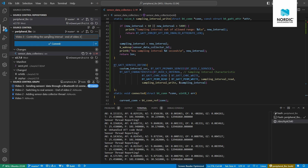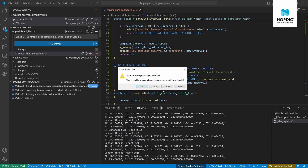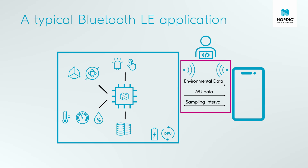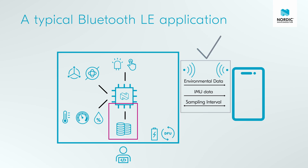I'll commit these changes — typing 'video three: controlling the sampling interval' — and switch back to the slides. In the next video we'll learn how to store sensor data in non-volatile memory on the device and how to retrieve the stored data. For example, if you leave the device somewhere collecting data and come back later, you'll be able to retrieve everything it stored during that time. Thanks for watching and see you in the next video.